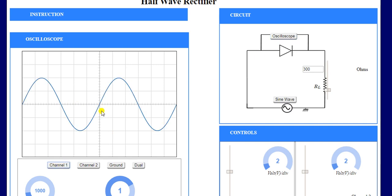Channel 1 is for input, channel 2 is for output. And if you want to see both input and output, then click on dwell.